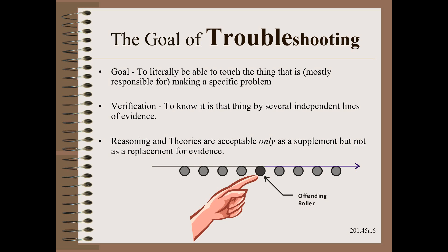Then, try to bend that shape of that candidate element and see if the response is to change the shape of the bagginess in a predicted way. Finally, if you get an appropriate response, verify the offending member with several independent lines of evidence.